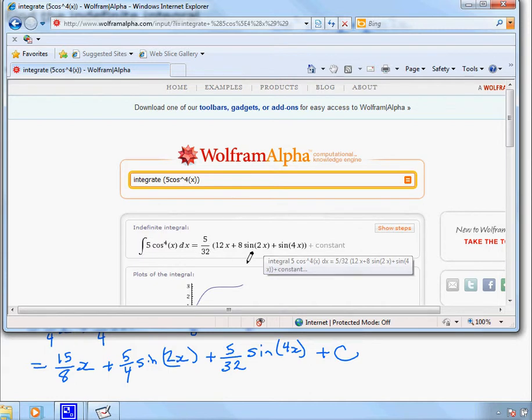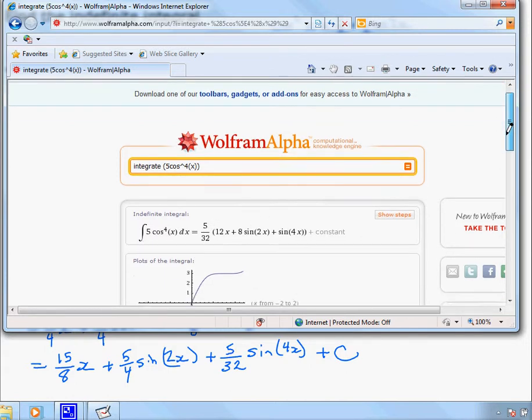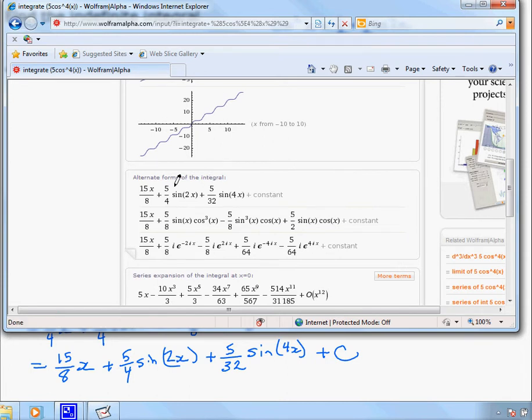So, you notice our answer doesn't quite match. The difference between the two of these is they've factored out this 5 over 32, leaving 12 and 8 here. But if you scroll down, it gives alternative forms of the answer. So different simplifications maybe. And you notice here,